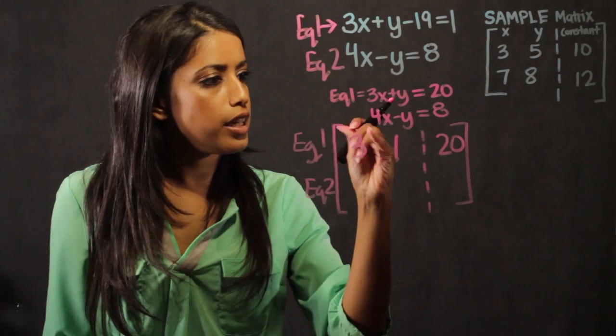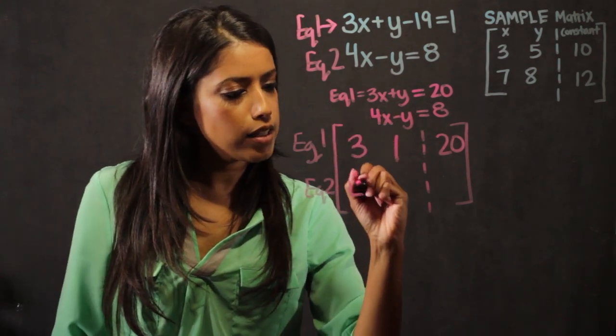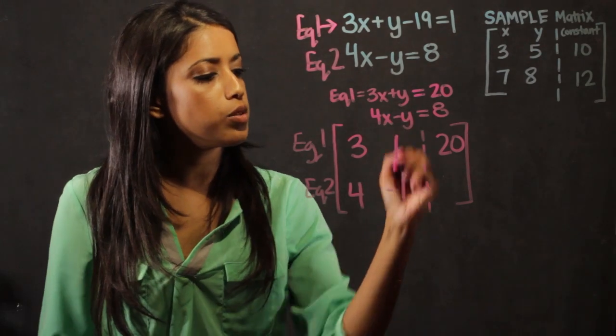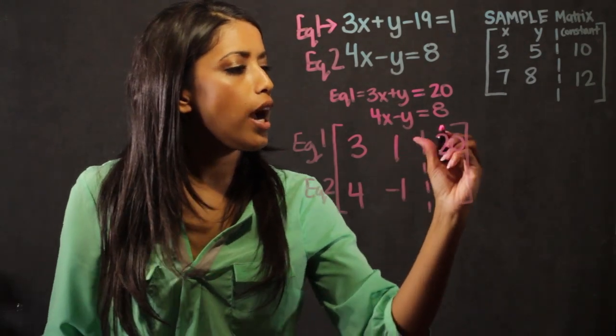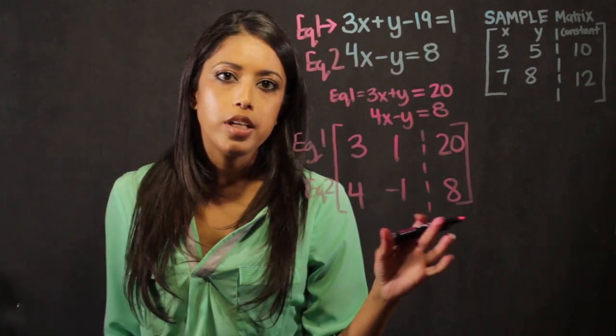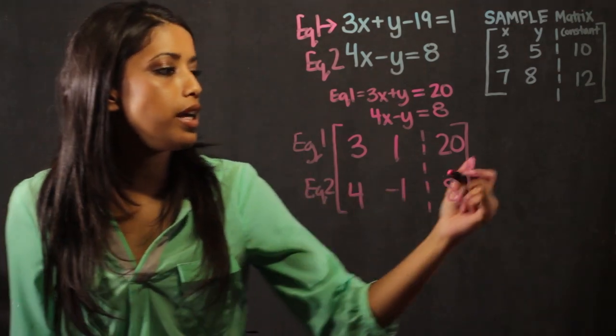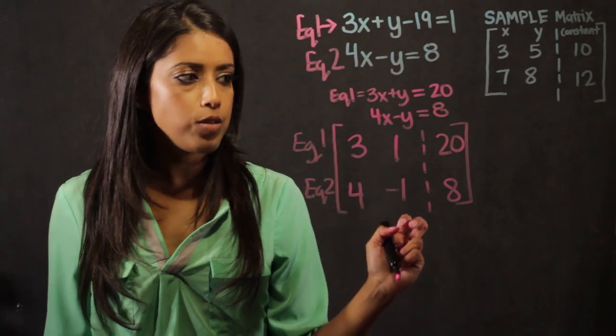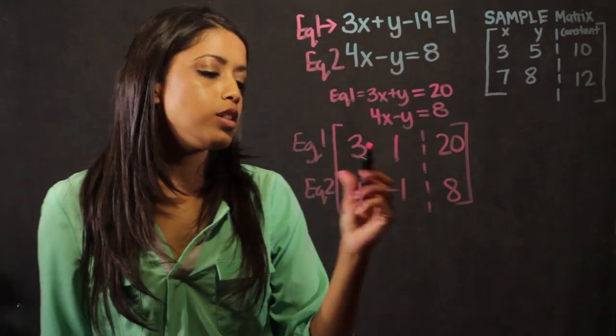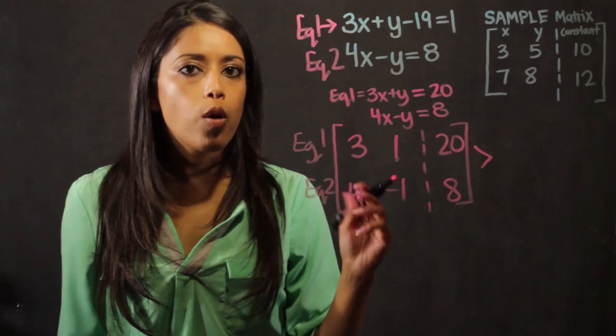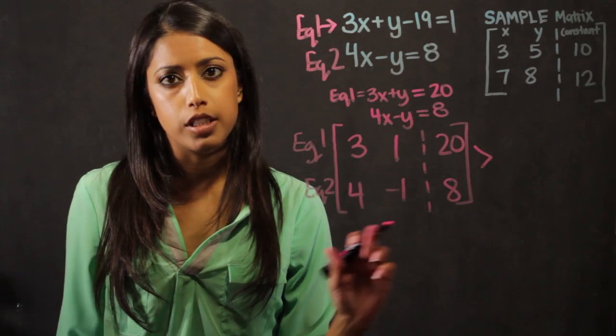For the second equation, it's a 4 in front of the x, a minus 1, the signs always travel, so it's a minus 1 for the y, and an 8 for the constant. So what we want to do, now that it's in matrices form, is to get one of the columns to 0 out. And what a 0 out means, when I add the two rows together, one of these columns is going to equal 0.